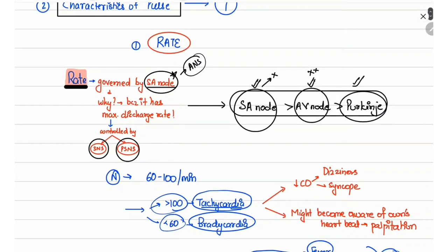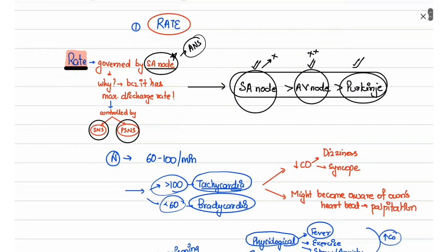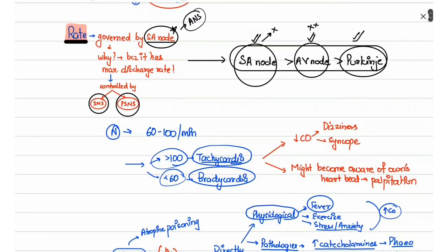Normally, the rate is 60 to 100 beats per minute. If the rate is more than 100, it is known as tachycardia, whereas if the rate is less than 60, it is known as bradycardia.